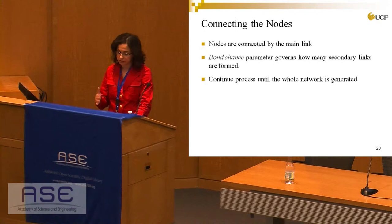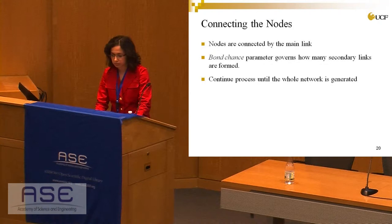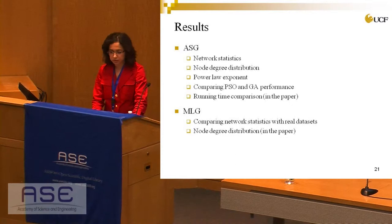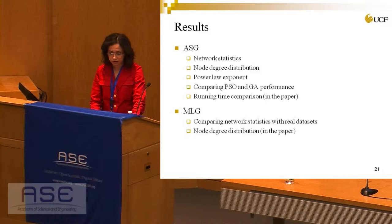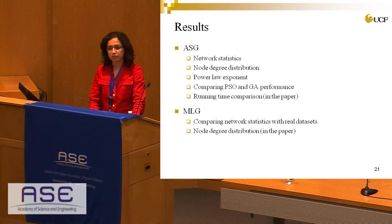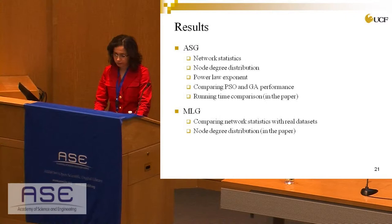We continue the process until the whole network is generated. For results, we first show the Attribute Synthetic Generator, comparing network statistics across our generator, a real dataset, and the previous one ETL generator. We show node degree distribution, the power law exponent, and compare the performance of particle swarm optimization versus genetic algorithm. The paper also includes running time comparisons, omitted here due to time. For the Multilink Generator, we show network statistics comparison; additional results are available in the paper.